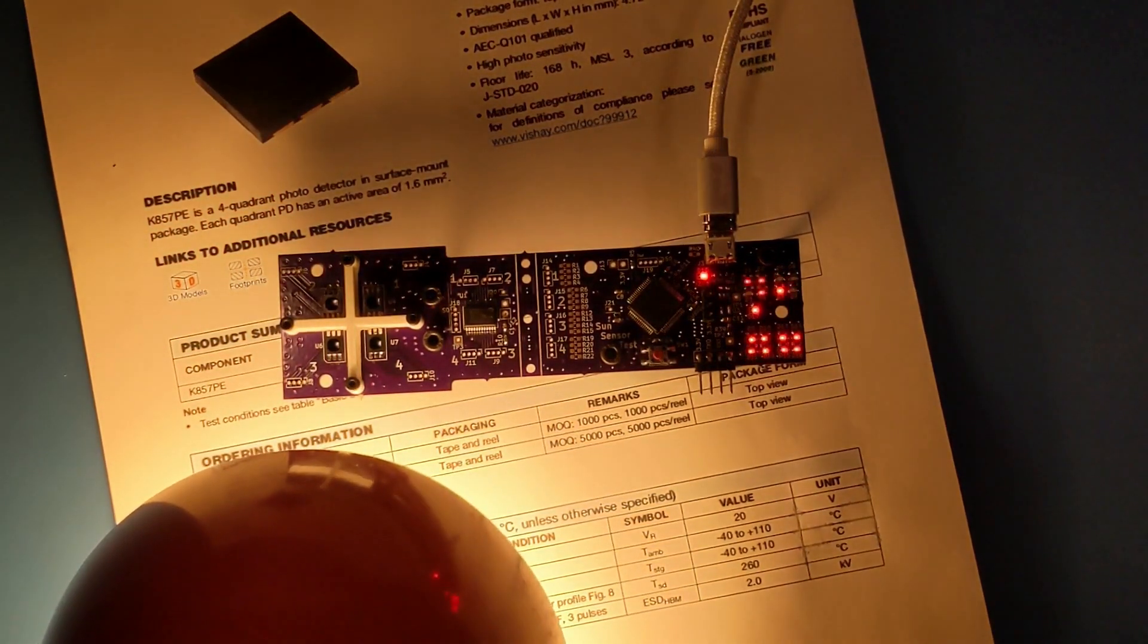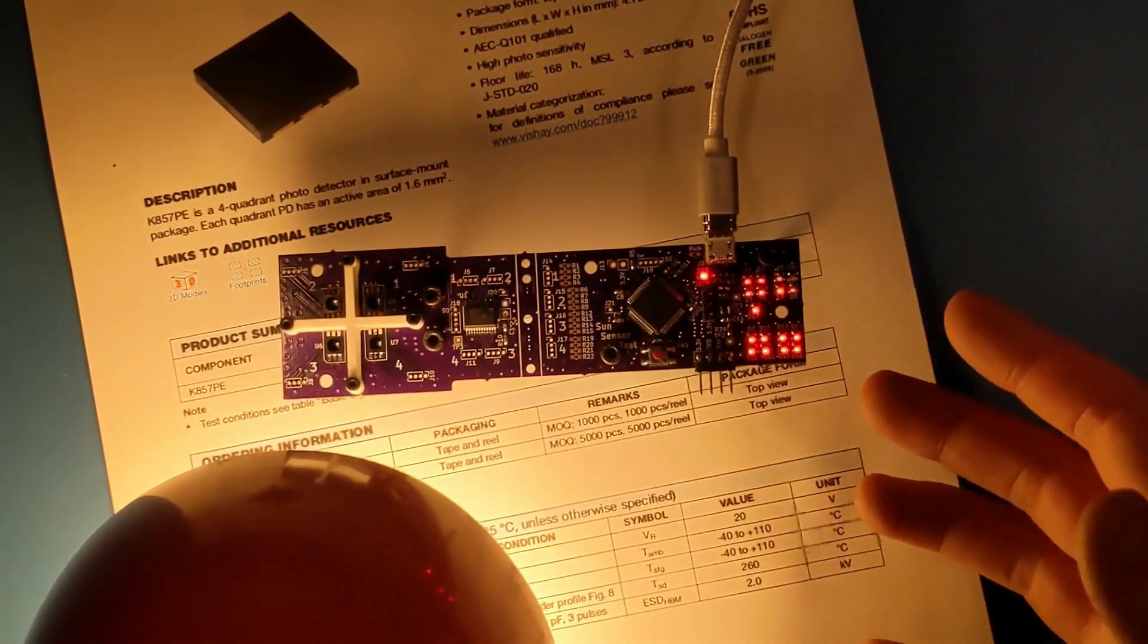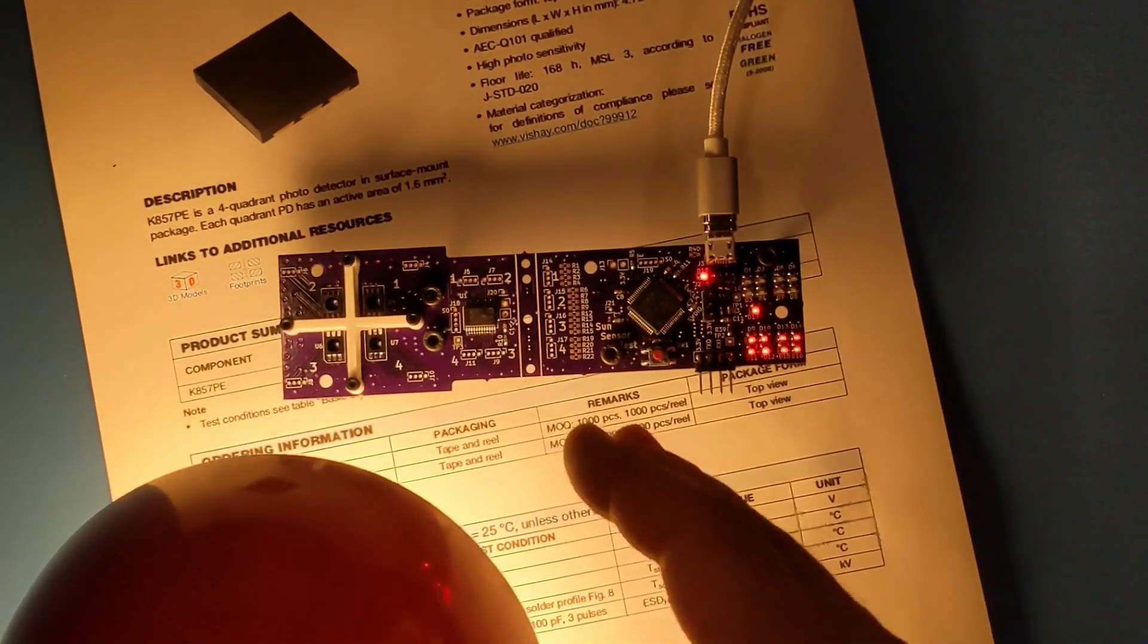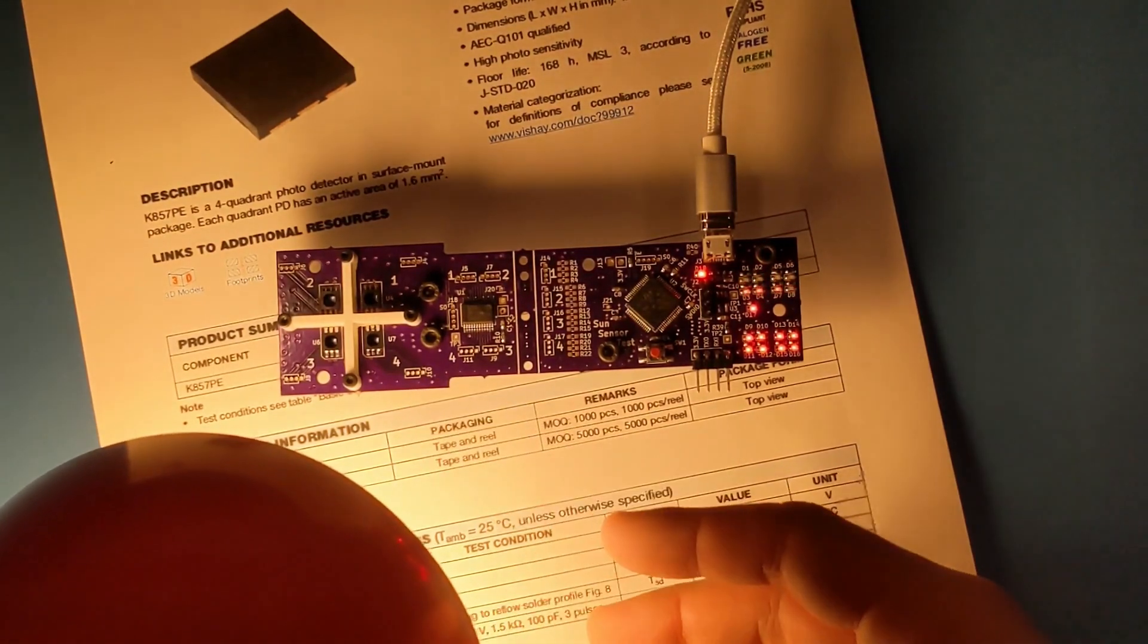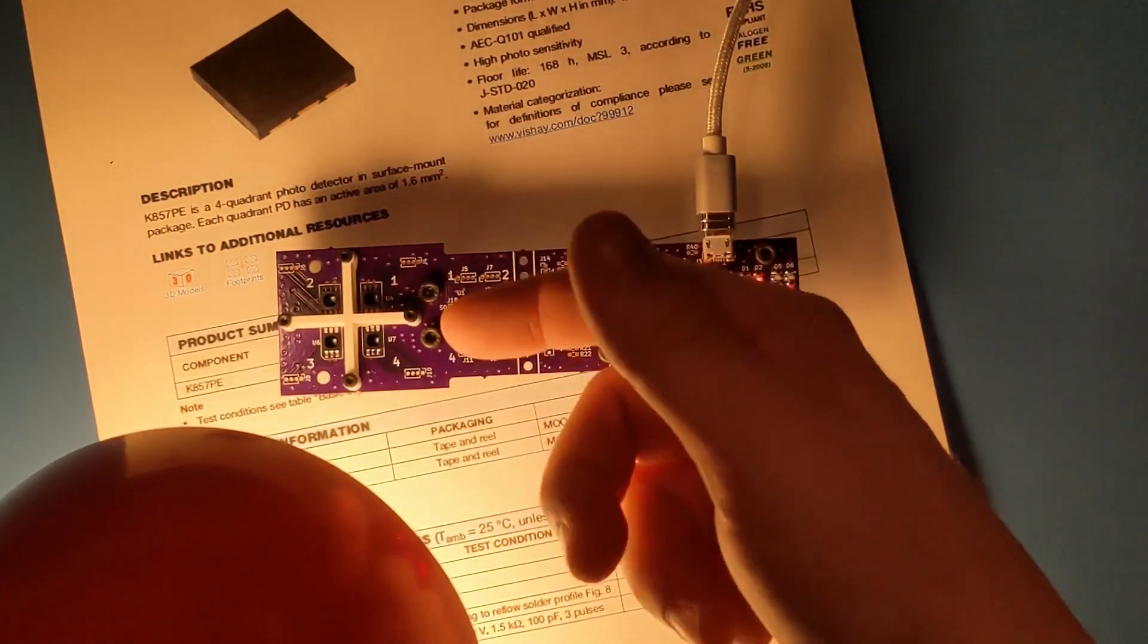But it should be good enough to get the picture that it does seem to detect which way light's coming in, or at least show up visually that these photodiodes are receiving more light than these photodiodes.